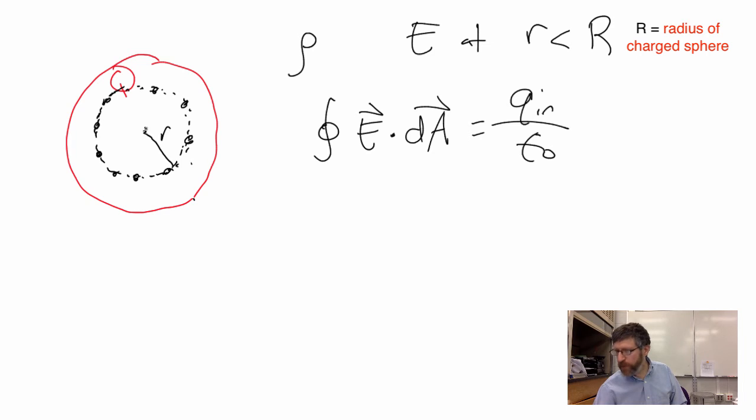The only way it can be the same everywhere is if the field points directly outward from the center. The field's got to point outward. If it were sometimes sideways, that wouldn't look the same everywhere. My DA vector is parallel to E. We can argue that E field vectors and DA vectors are parallel. I get to get rid of that dot product and just make it E dA.